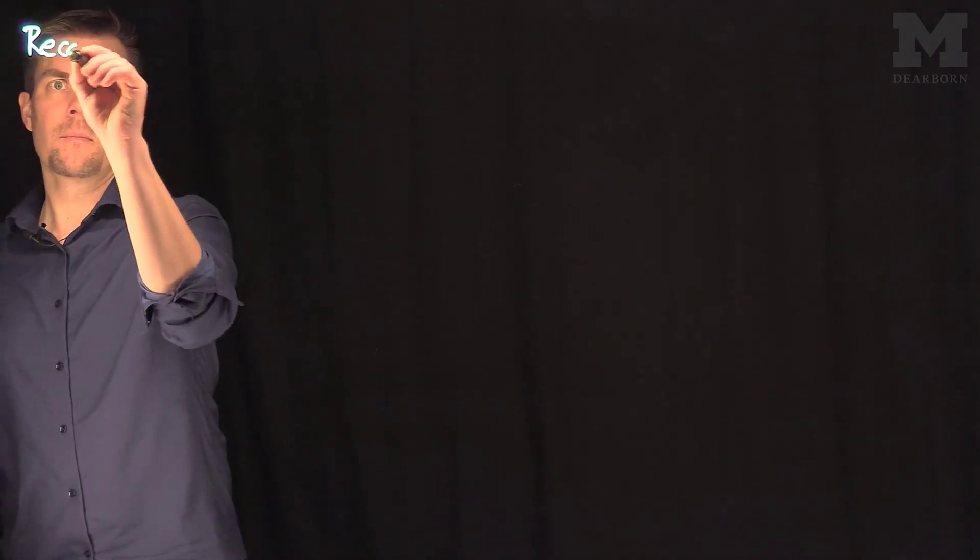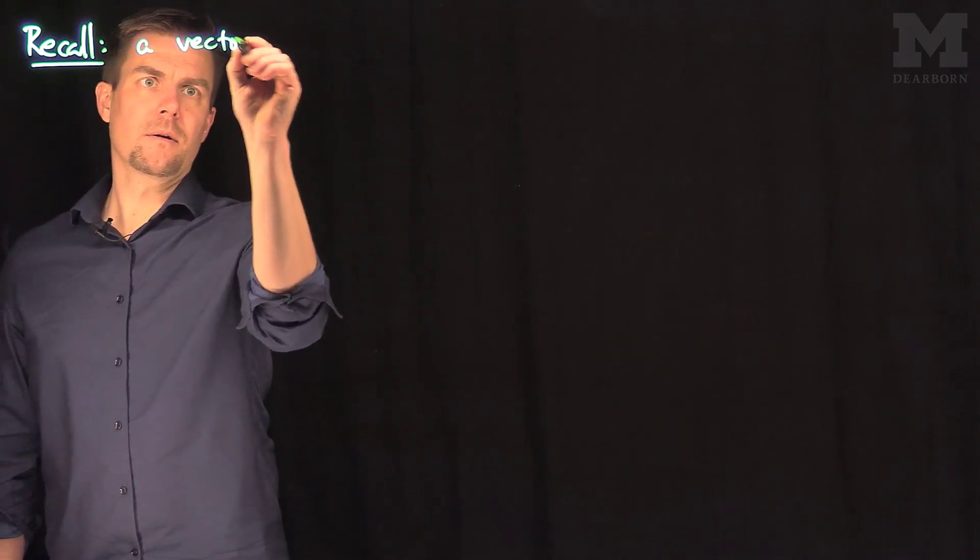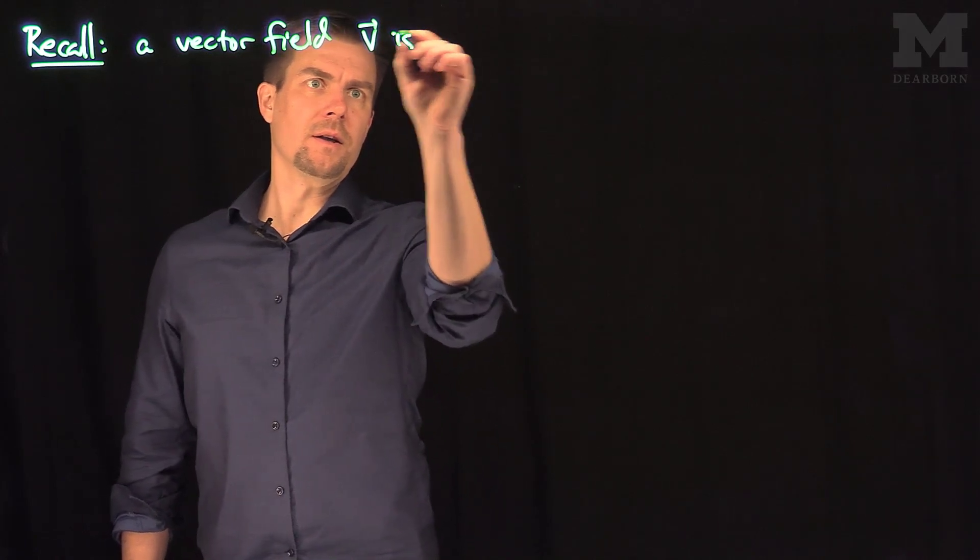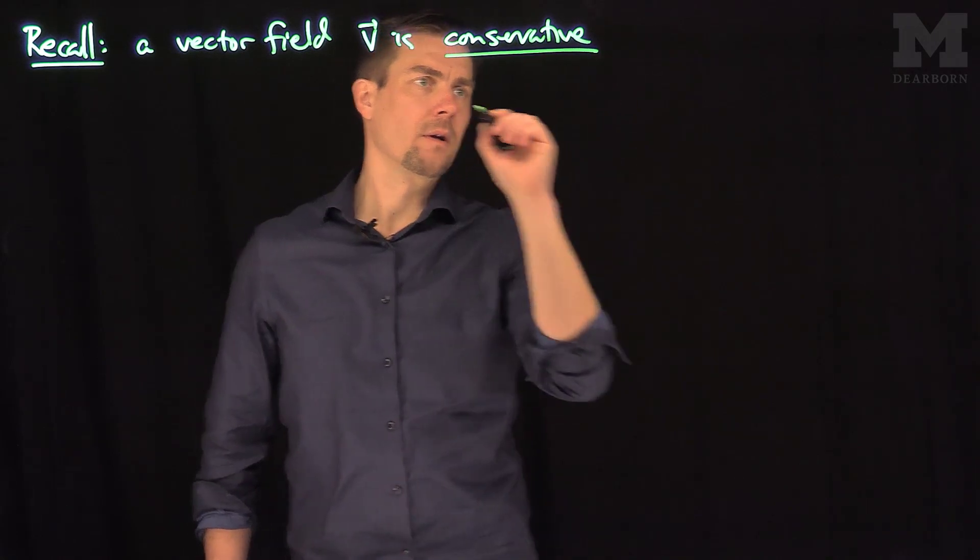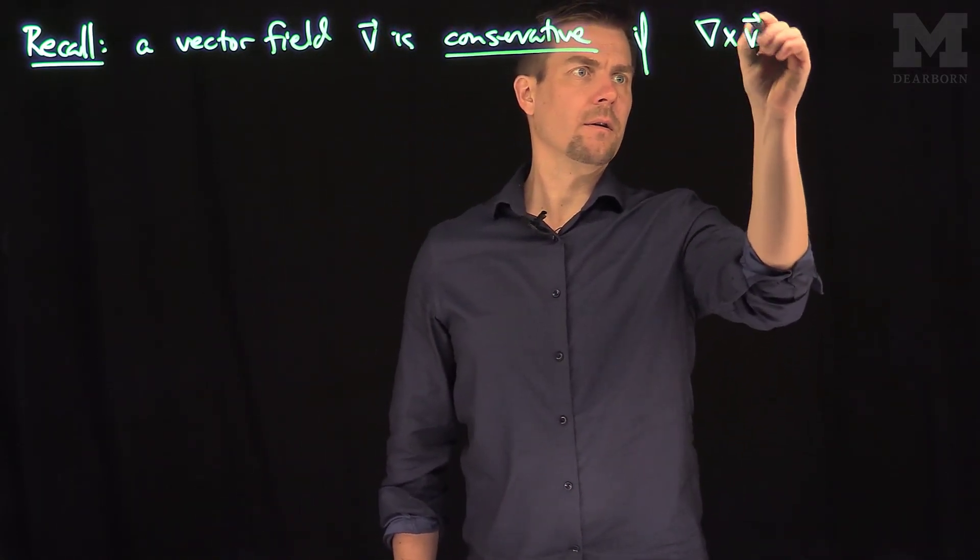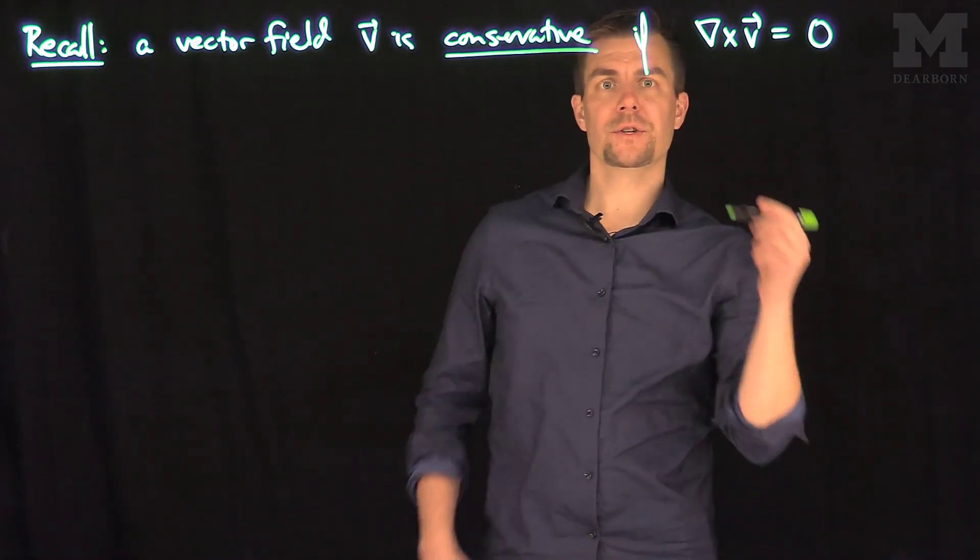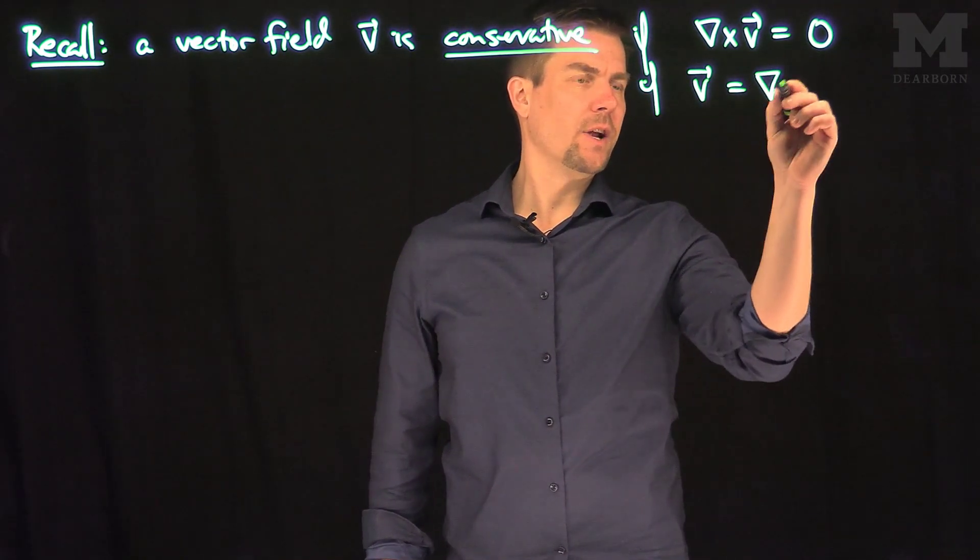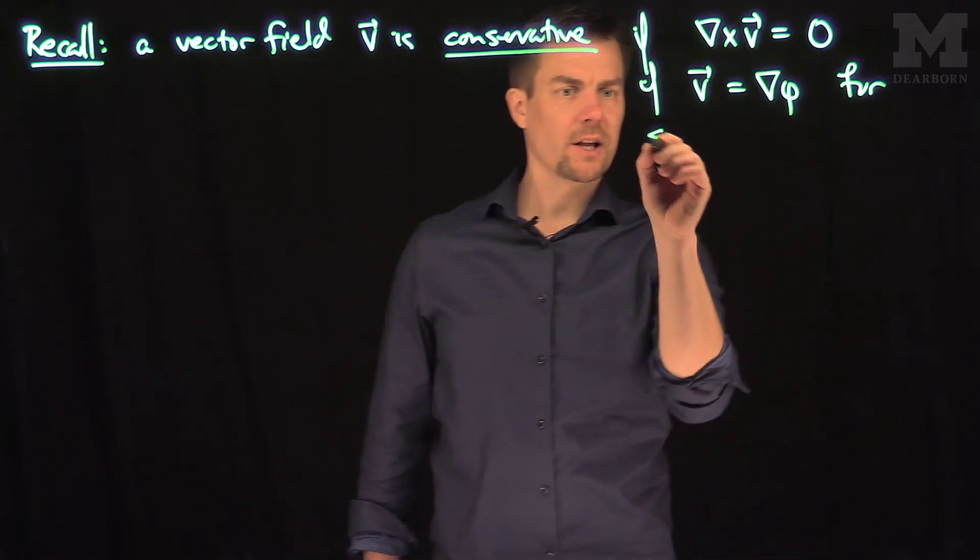We recall a vector field V is called conservative if the curl of V is equal to zero. This is one condition which tells me a vector field is conservative. Or, it's conservative if V is the gradient of phi for some scalar function phi.